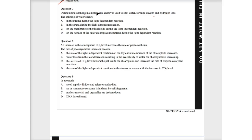So with question seven, it asks, during photosynthesis in chloroplasts, energy is used to split water forming oxygen and hydrogen ions. So we know we're splitting water into oxygen and hydrogen ions. I immediately think from that, the light dependent phase. I already know that.